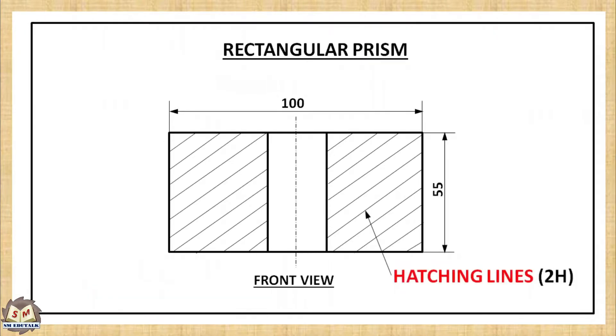Hatching is used to show the area of a section. A set of continuous thin lines at a convenient angle, preferably 45 degrees, are called hatching lines.